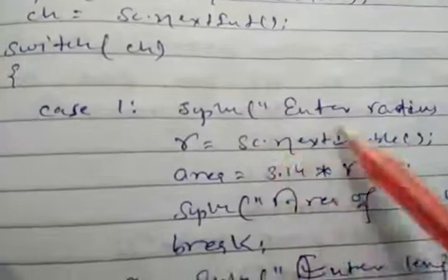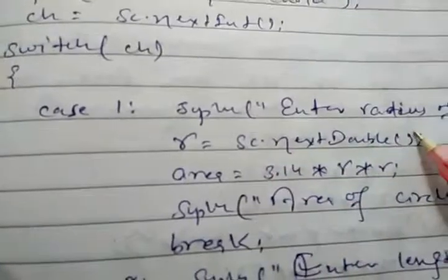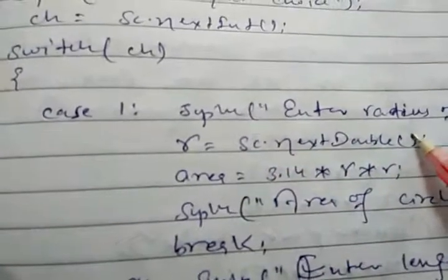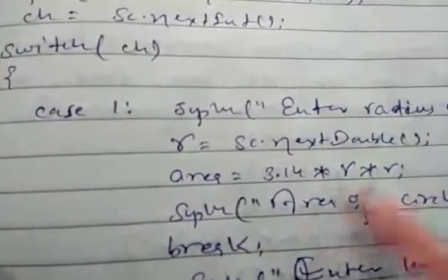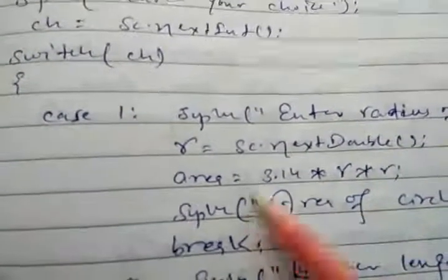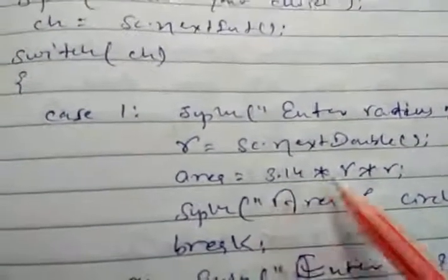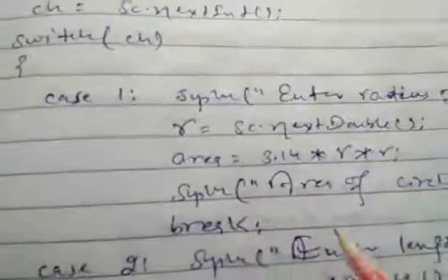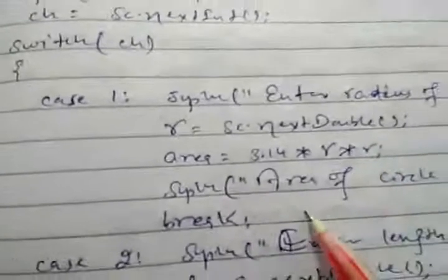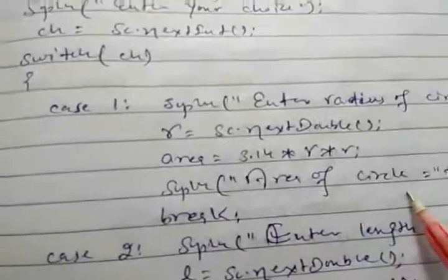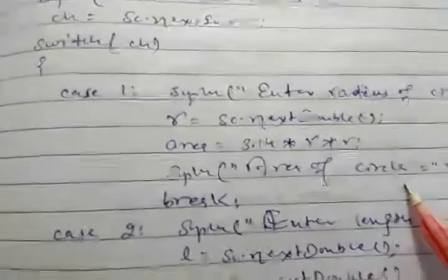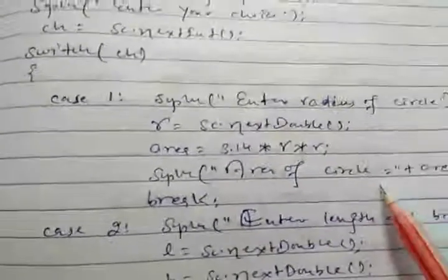In case 1, r = sc.nextDouble() because r is a double type. Area = pi * r * r. Then we are printing the area of circle equal to area.